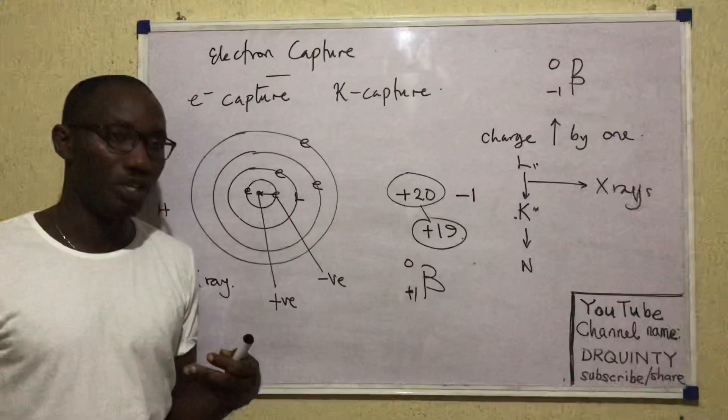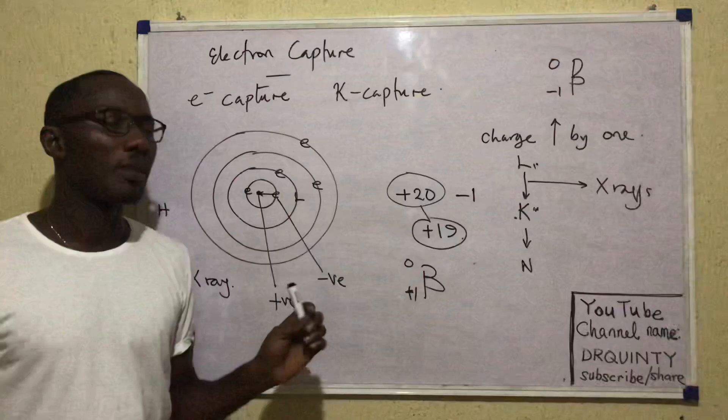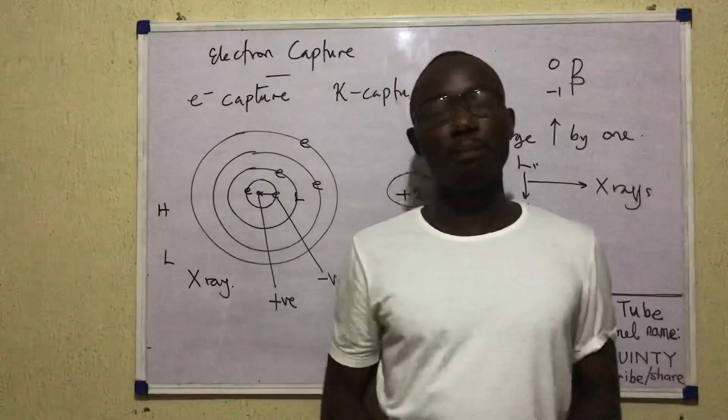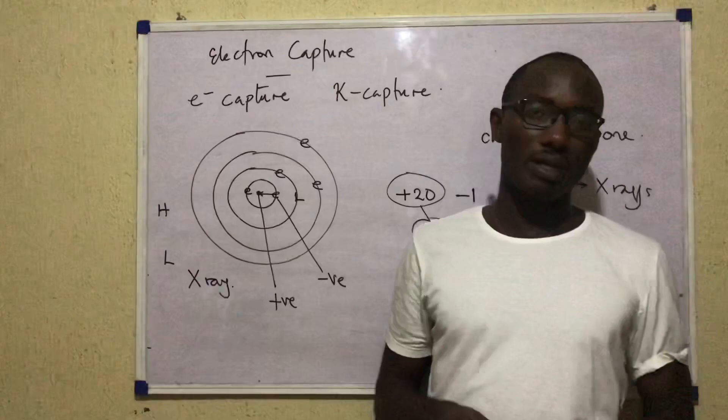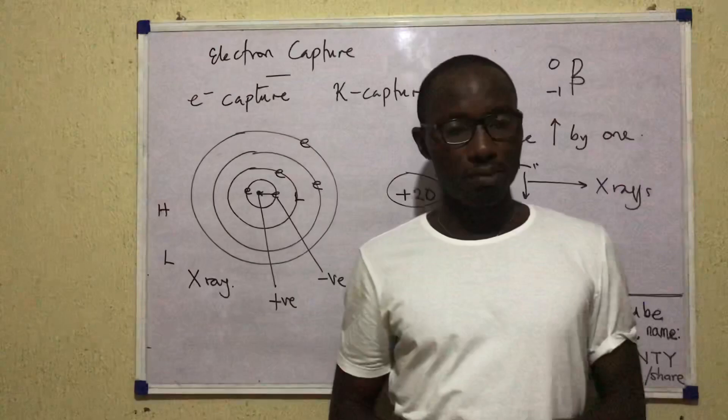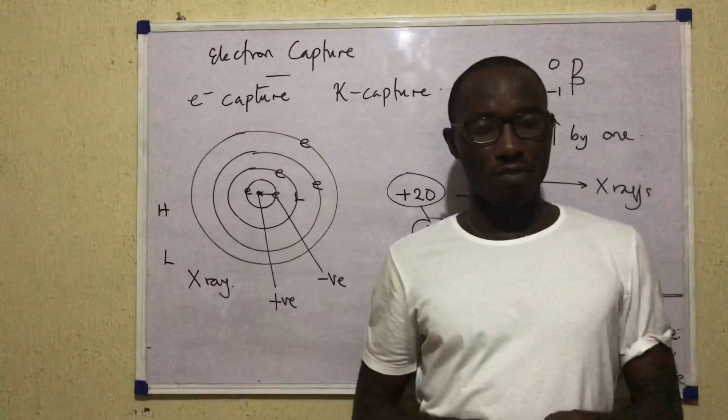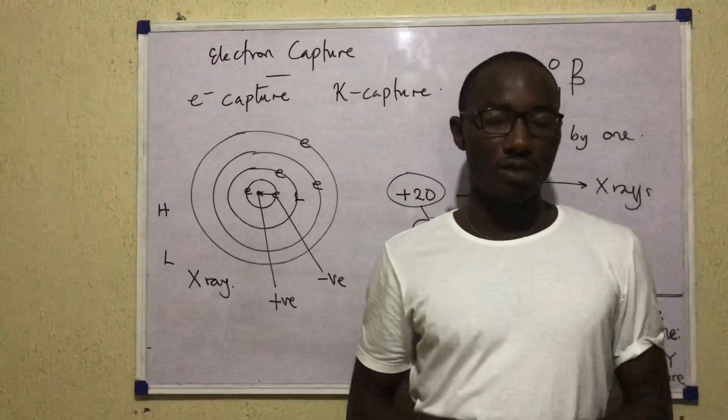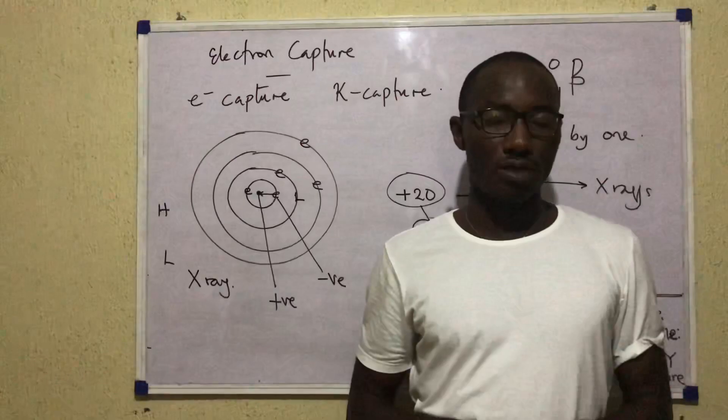K-capture is a common phenomenon in nuclear chemistry. In the second video on radioactivity, we'll be covering the quantitative aspects: calculations on half-life, decay constant, activity, and specific activity. A formula for activity and specific activity will be provided, which will be very useful for most questions you encounter. We'll also discuss mass defects, mass excesses, binding energies, and binding energy per nucleon. See you in the next video.